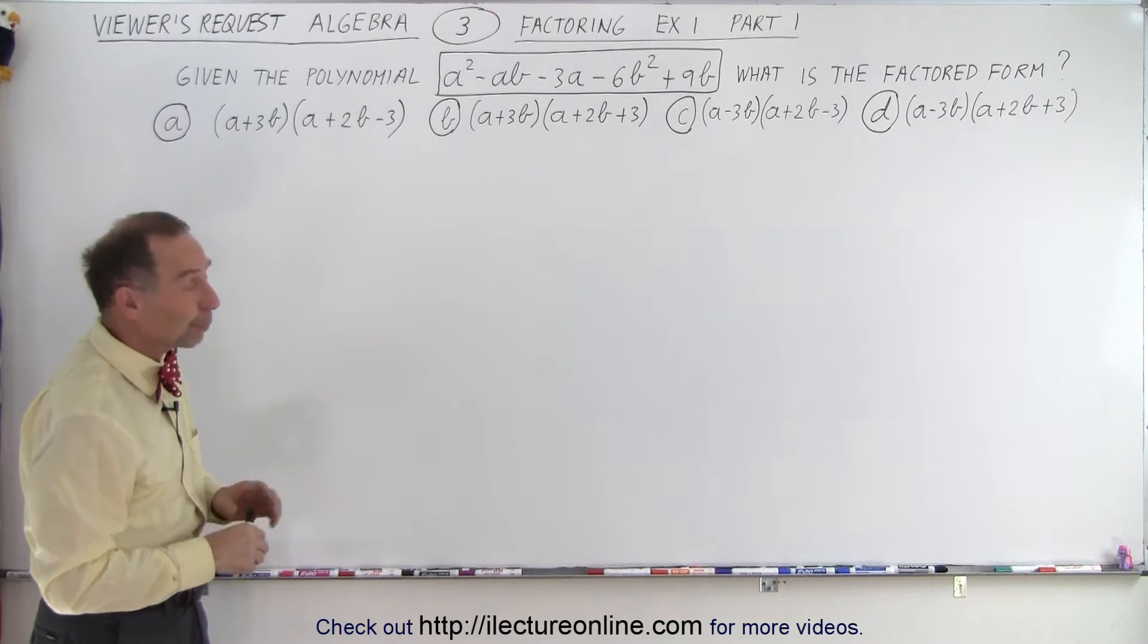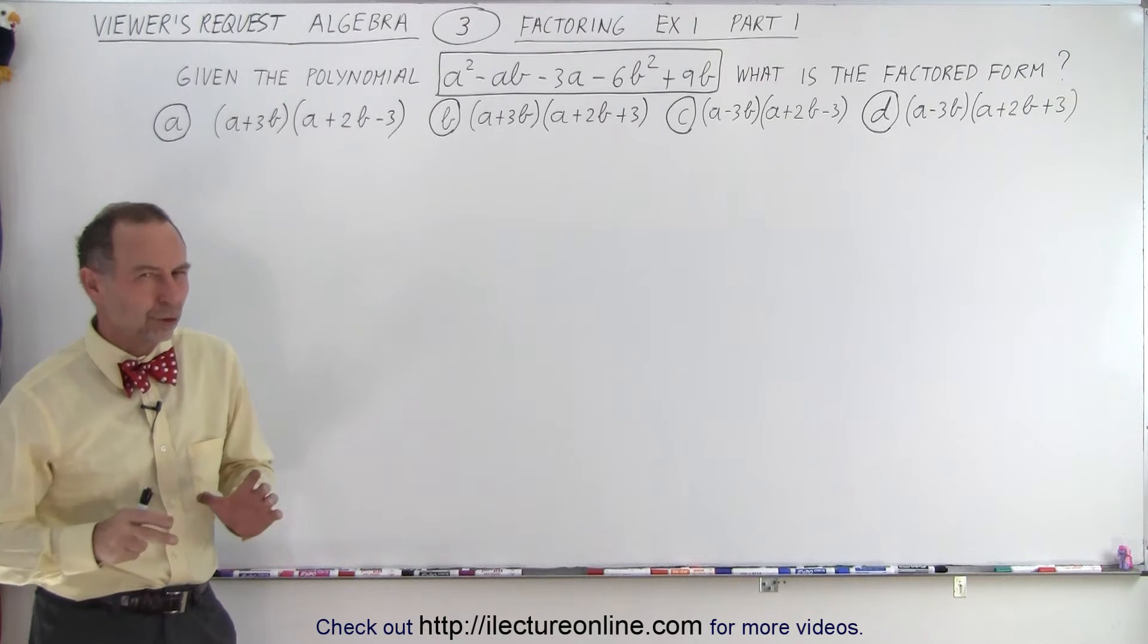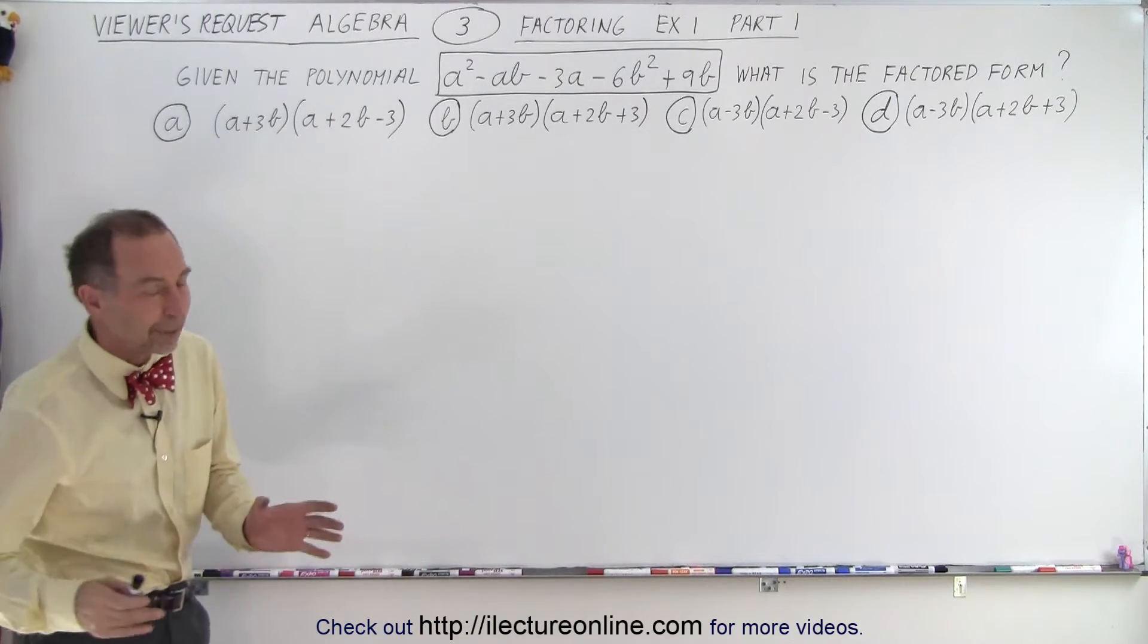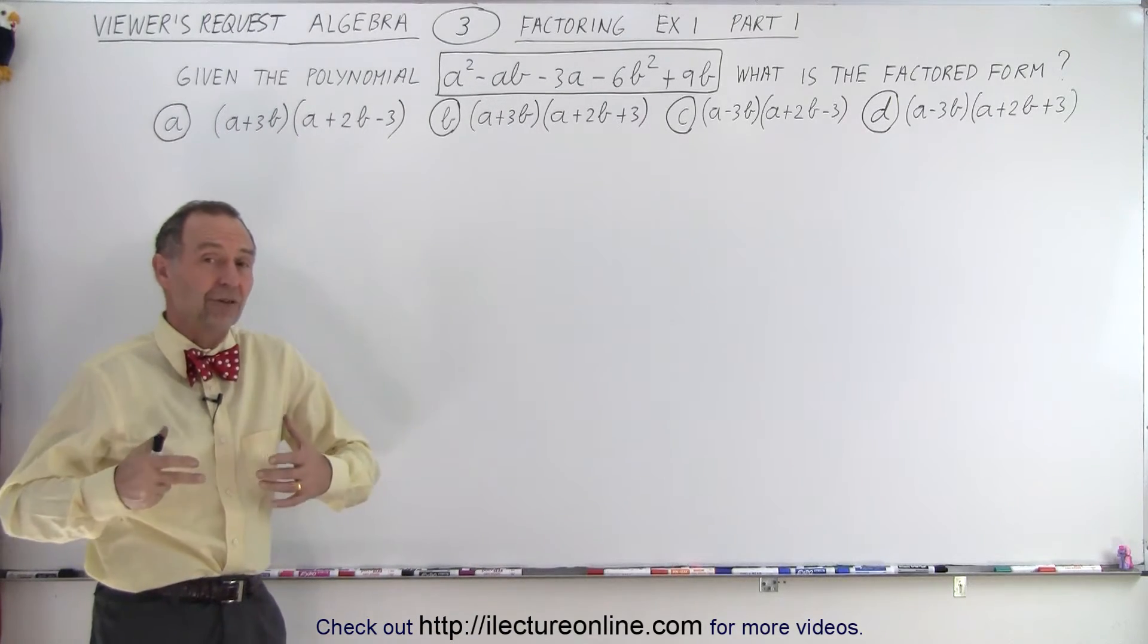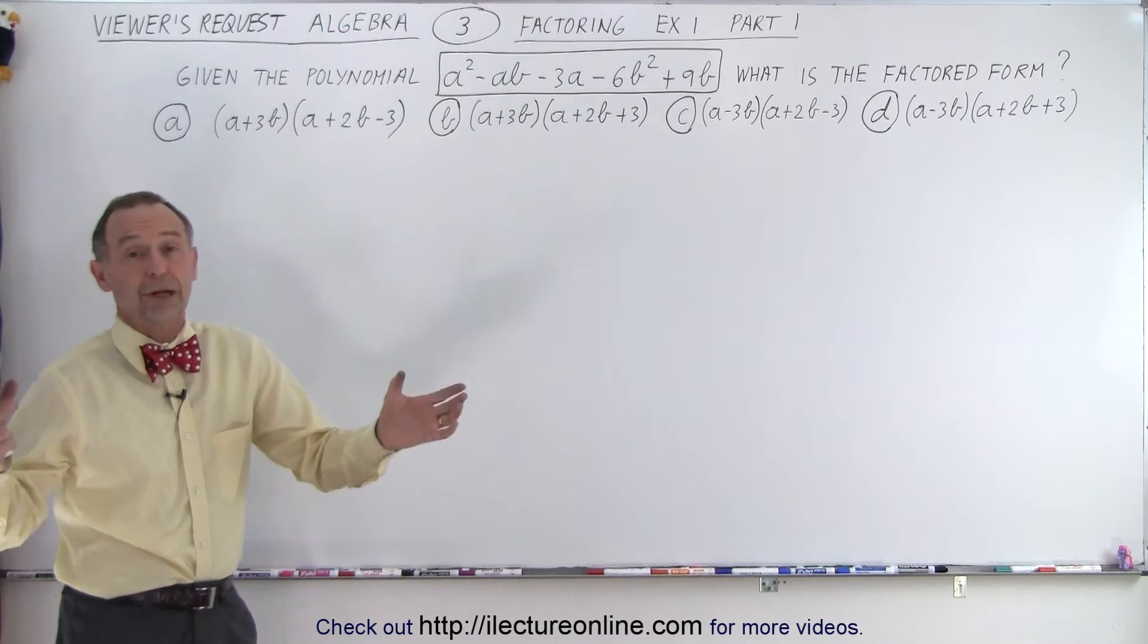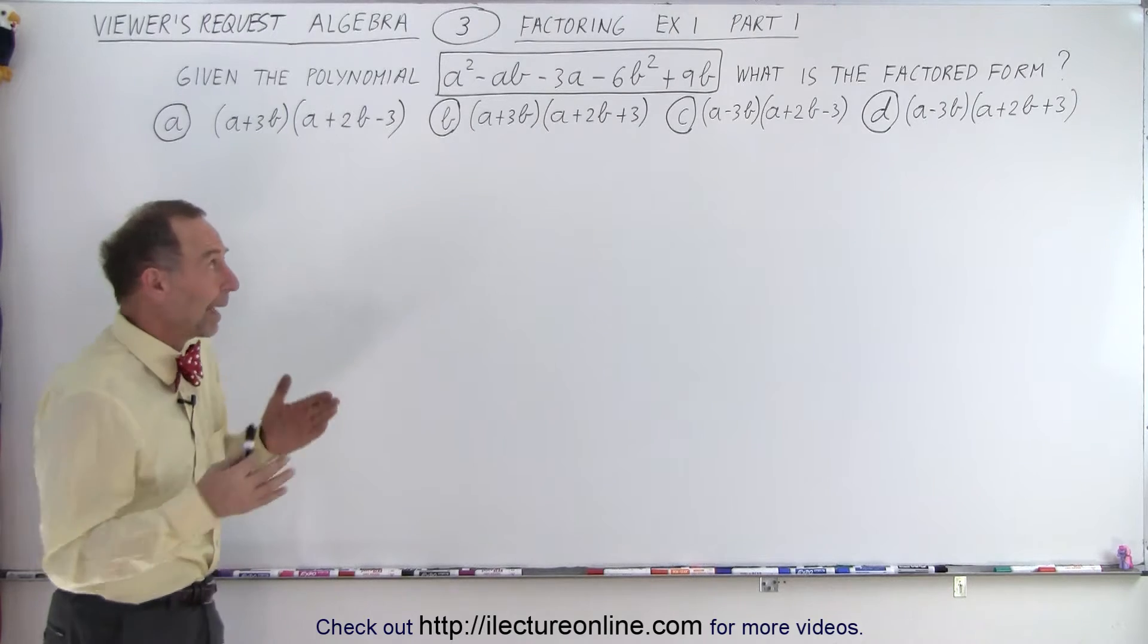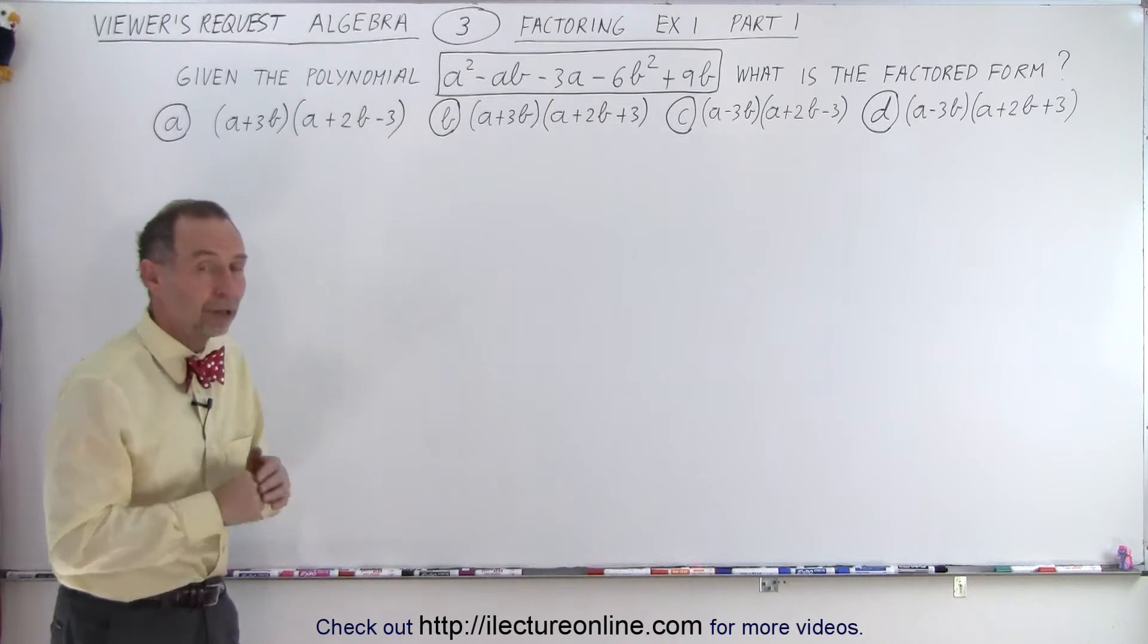We have a polynomial with five terms, which we're not used to doing, and they give us four possible answers. Notice they don't look like the typical answers where we're asked to factor a trinomial and get the product of binomials. We could of course solve the problem by actually factoring that polynomial.